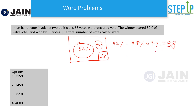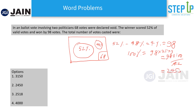If 4% equals 98, then 100% — the total valid votes — equals 98 multiplied by 25 (which is 100 divided by 4). That gives us 2450 valid votes. But the question asks for total votes cast, so we add the 68 void votes: 2450 plus 68 equals 2518. The total number of votes cast is 2518.